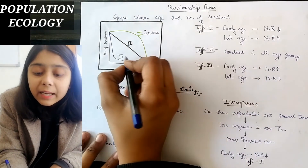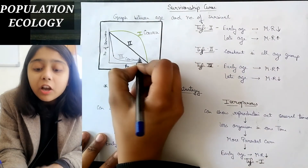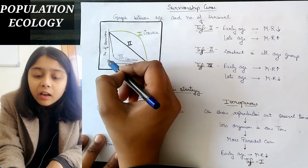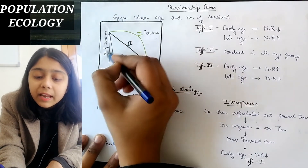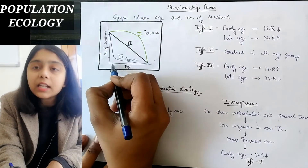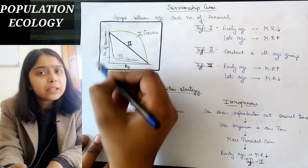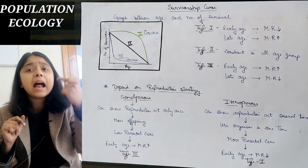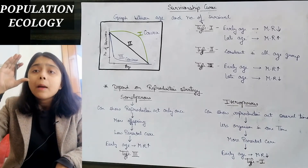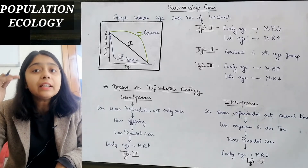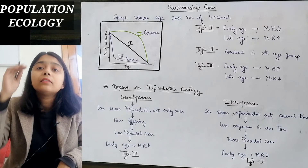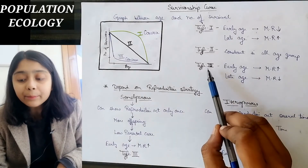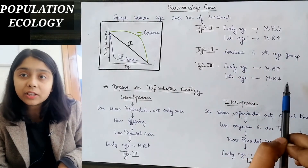The third curve is the concave curve. In the concave curve, when age was less, the number of survivors decreased sharply. In early age, the number of survivors decreased rapidly, but in late age, the decrement was very minimal. It means that in early age, the mortality rate was very high and death rate was very high, but in late age, the death rate decreased and the number of survivors becomes almost constant.